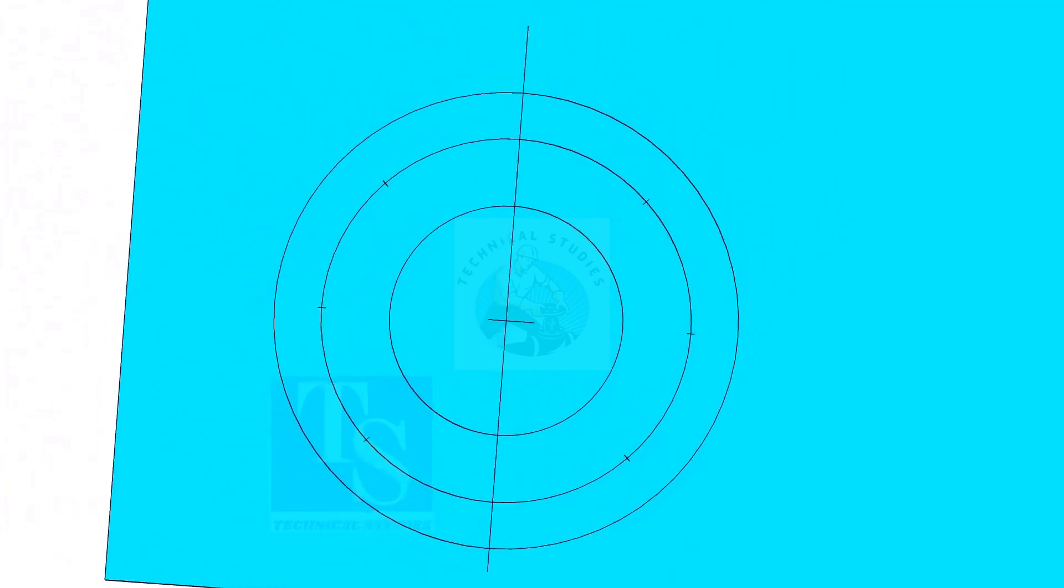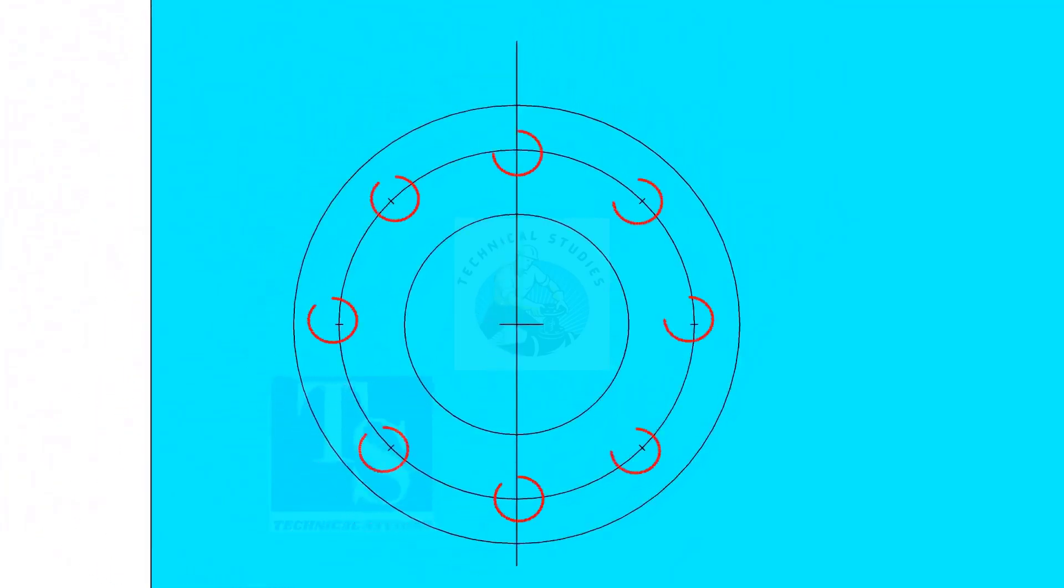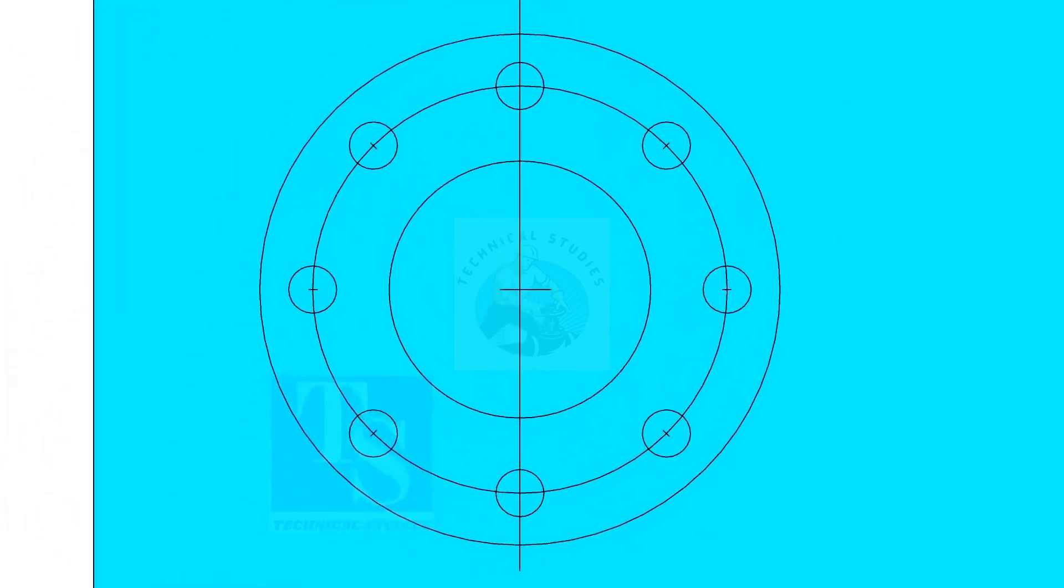Punch mark all the 8 divisions, and draw circles of the diameter of the bolt holes if you are drilling the holes with a normal drill bit. Thank you for watching.